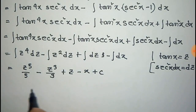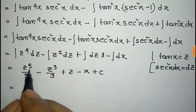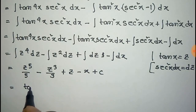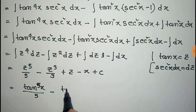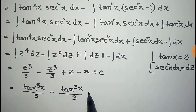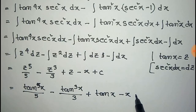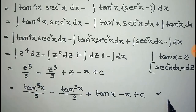And there will be a constant of integration C. Now we put back z = tan(x), so it will be tan⁵x by 5, minus tan³x by 3, plus tan(x), minus x, plus C. Thus we complete the integration of tan⁶x.